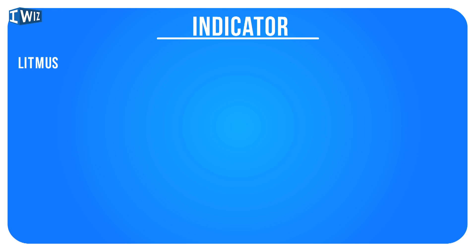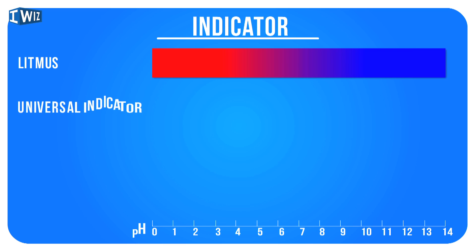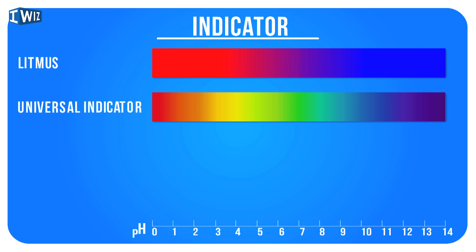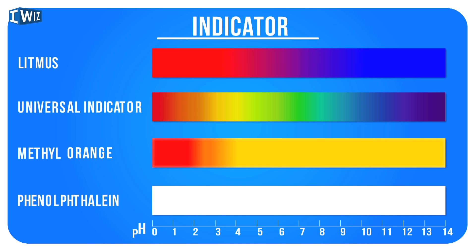So we have four indicators: litmus, phenolphthalein, universal indicator, and methyl orange. To recap: litmus turns red in an acidic solution and blue in a basic solution. The universal indicator gives a whole spectrum of colors — deep blue on the basic end and red on the acidic end. Methyl orange turns red in an acidic solution and yellow in a basic solution. Phenolphthalein is transparent in a neutral or acidic solution, and turns hot pink in a basic solution.